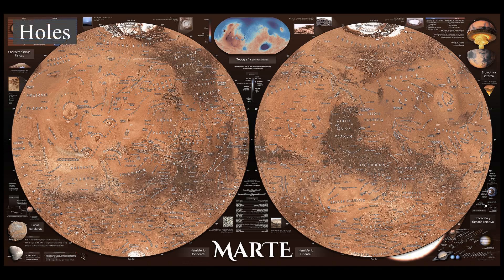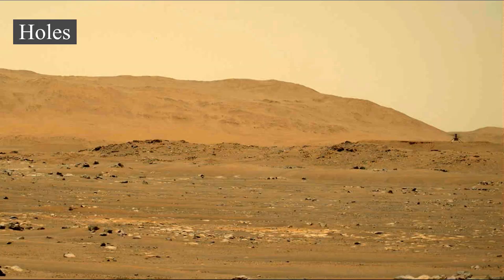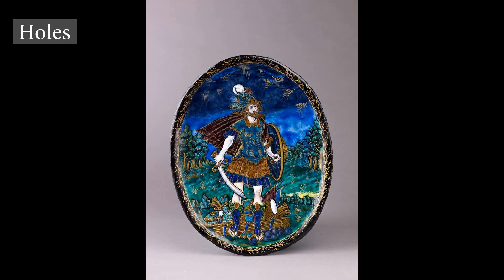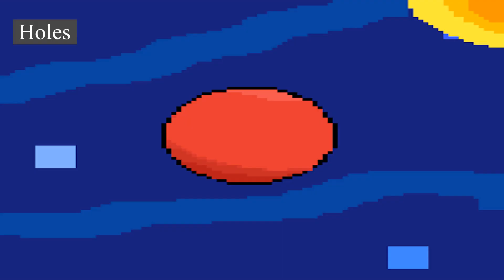Images from the Thermal Emission Imaging System aboard NASA's Mars Odyssey orbiter have revealed seven possible cave entrances on the flanks of the volcano Arsia Mons. The caves, named after loved ones of their discoverers, are collectively known as the Seven Sisters. Cave entrances measure from 100 to 252 meters wide and are estimated to be at least 73 to 96 meters deep. The interiors of these caverns may be protected from micrometeoroids, UV radiation, solar flares, and high-energy particles that bombard the planet's surface.